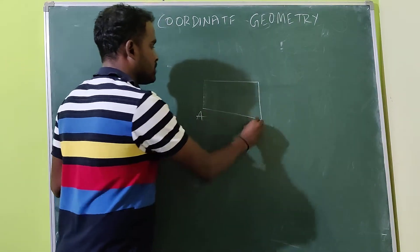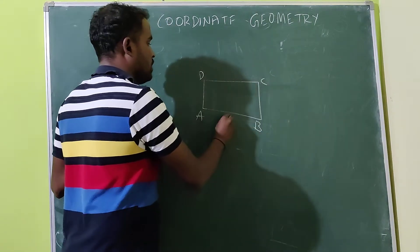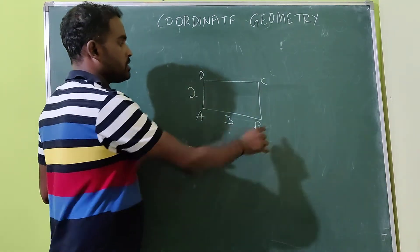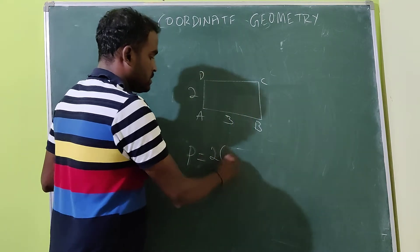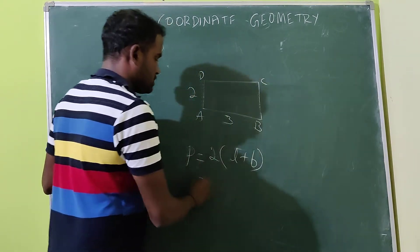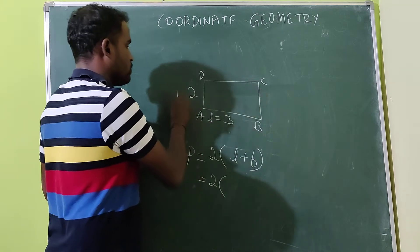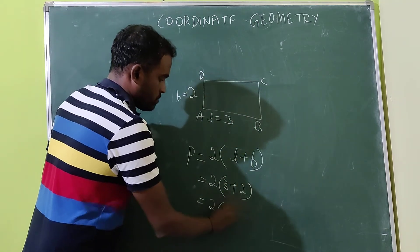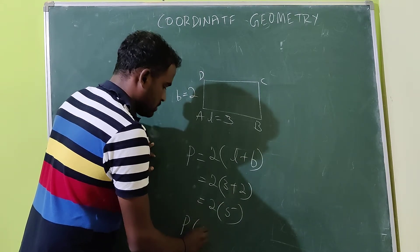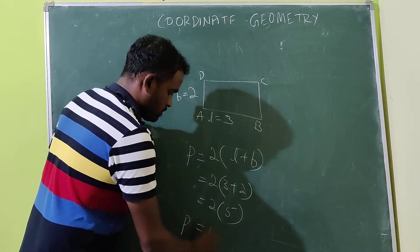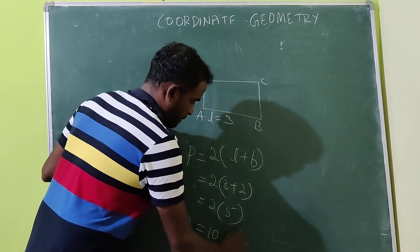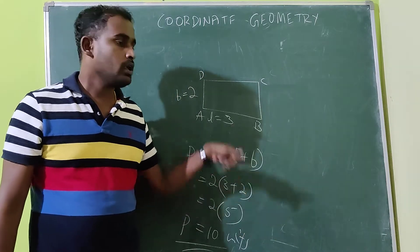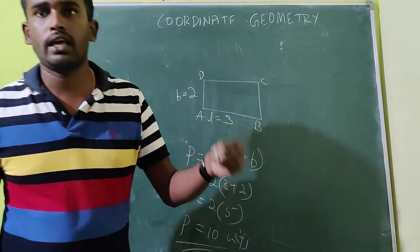Another question they may ask based on the same rectangle ABCD with length three and breadth two: find the perimeter of the rectangle. Perimeter is nothing but the boundary. The formula is 2 into (L plus B) equals 2 into (3 plus 2) equals 2 into 5, so perimeter P equals ten units.